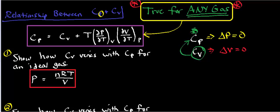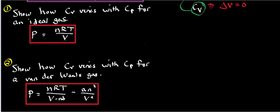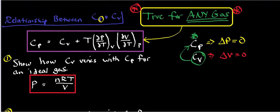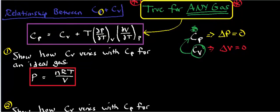What we're going to do in this video is quantify the relationship between Cp and Cv for various equations. We're going to do this for the ideal gas and also for a van der Waals gas. In another video, we'll do this for the hard shell model, which is another model equation of state you could use for certain problems.